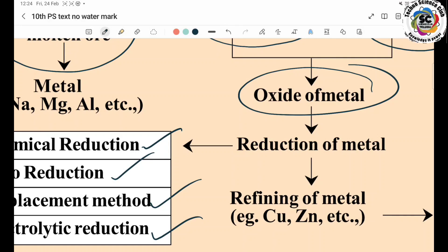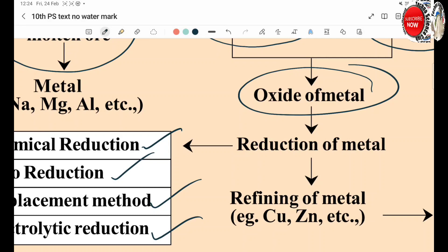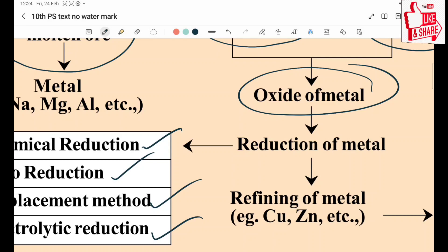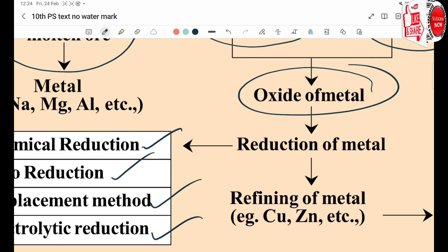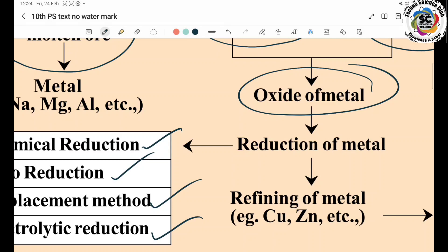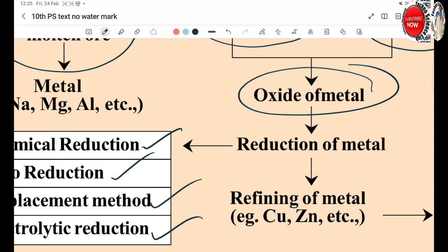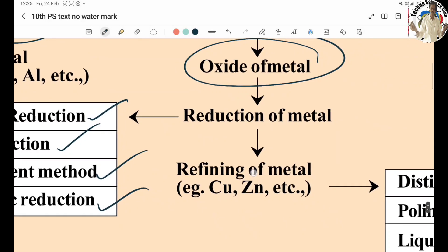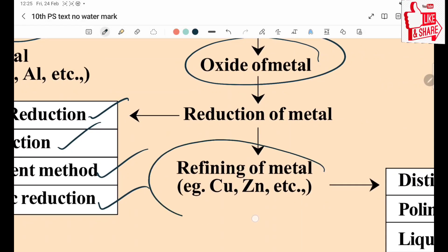Carbonate Ores and Sulfide Ores are first converted to Oxide Ores. Oxide Ores then undergo Reduction to get Pure Metal. The flow: Carbonate Ores → Calcination → Oxide Ores; Sulfide Ores → Roasting → Oxide Ores; Oxide Ores → Reduction → Pure Metal.